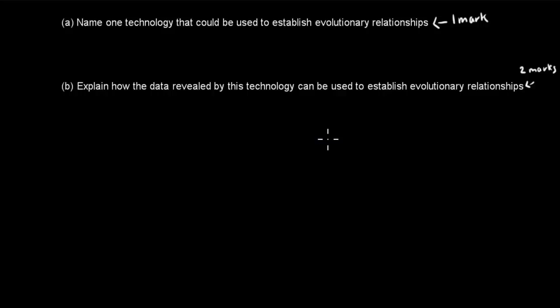Welcome back. So for the first one, obviously it's worth one mark and all it asks you to do is name. So in this case, you just have to name one technology that could be used to establish evolutionary relationships, and the example I gave was DNA sequencing technology. So just mentioning that already gets you one mark. That's your max for this question.